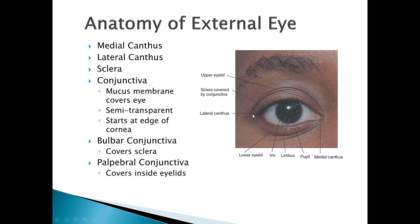The sclera is the white portion of the eye and is covered by the conjunctiva — the clear layer that can become red when inflamed. There are two types of conjunctiva: the bulbar conjunctiva, which covers the sclera, and the palpebral conjunctiva, which covers the inside of the eyelids. The palpebral conjunctiva is important because the only way to examine it is by flipping the eyelid inside out.